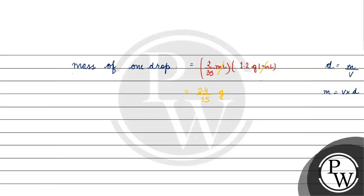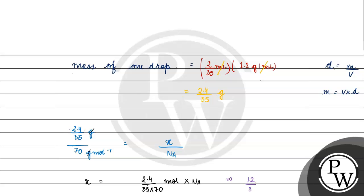We know the mass of one drop and the molar mass of the liquid, which is 70 gram per mole. So number of molecules x = (2.4/35) divided by 70, multiplied by Avogadro's number. Solving this gives x = (1.2 × 35²) / (something) × Avogadro's number, which simplifies to the correct option.